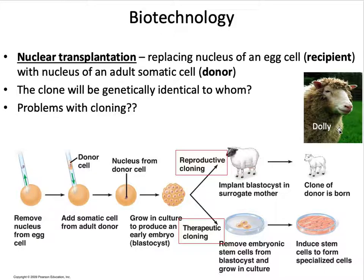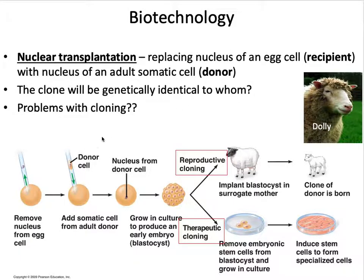Dolly was a clone but had health issues, and her lifespan was about half that of a normal sheep. Technology has since improved the health of clone organisms, though health concerns remain. The clone is genetically identical to the somatic cell donor — the nucleus implanted into the egg cell — so Dolly was identical to whoever that somatic cell came from.